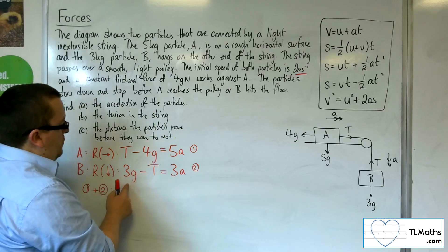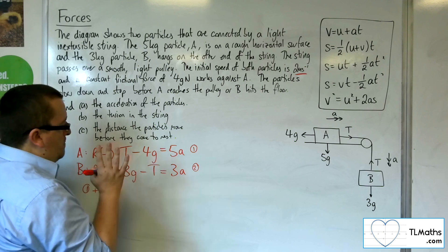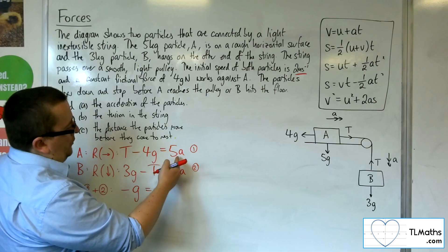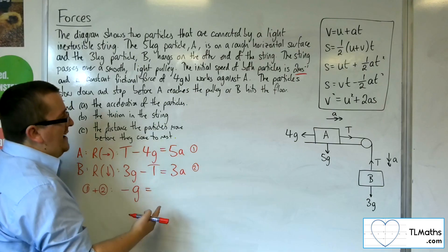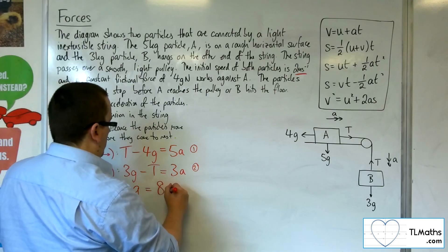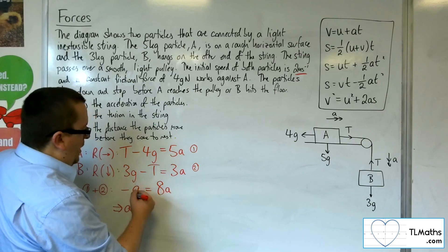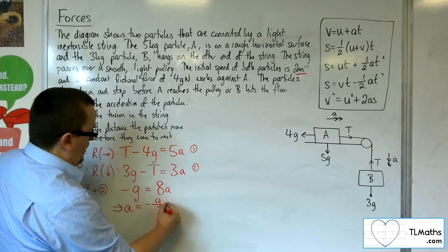I'm going to have 3G and minus 4G. So minus G has got to be equal to 5A plus 3A, which is 8A. And so A is minus G over 8.